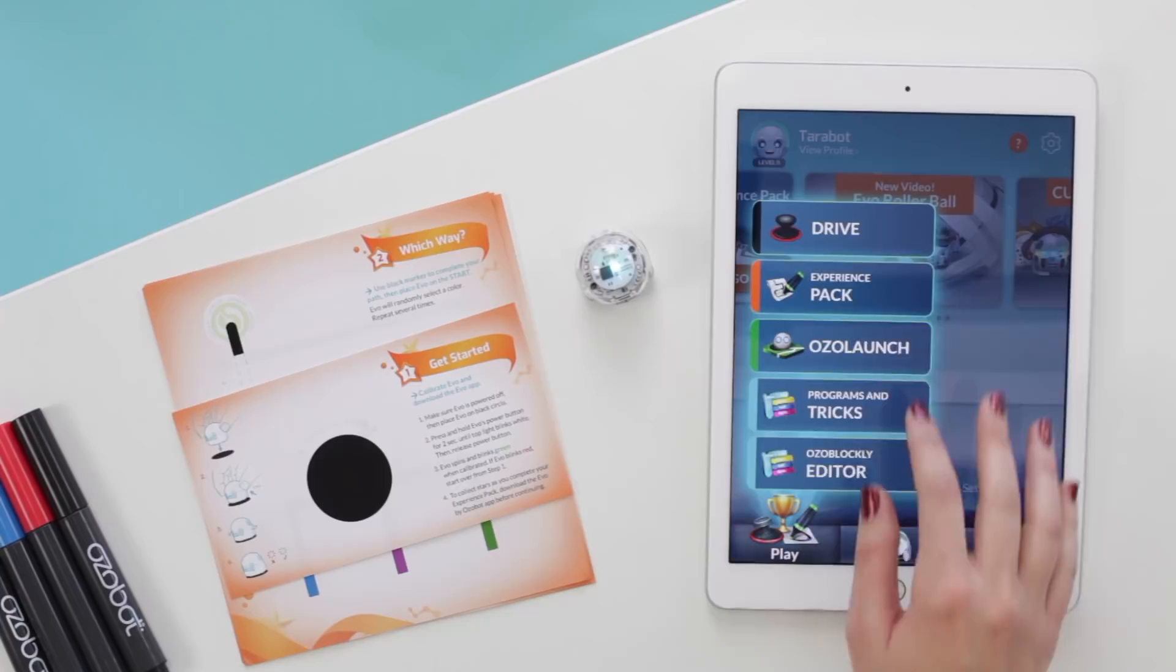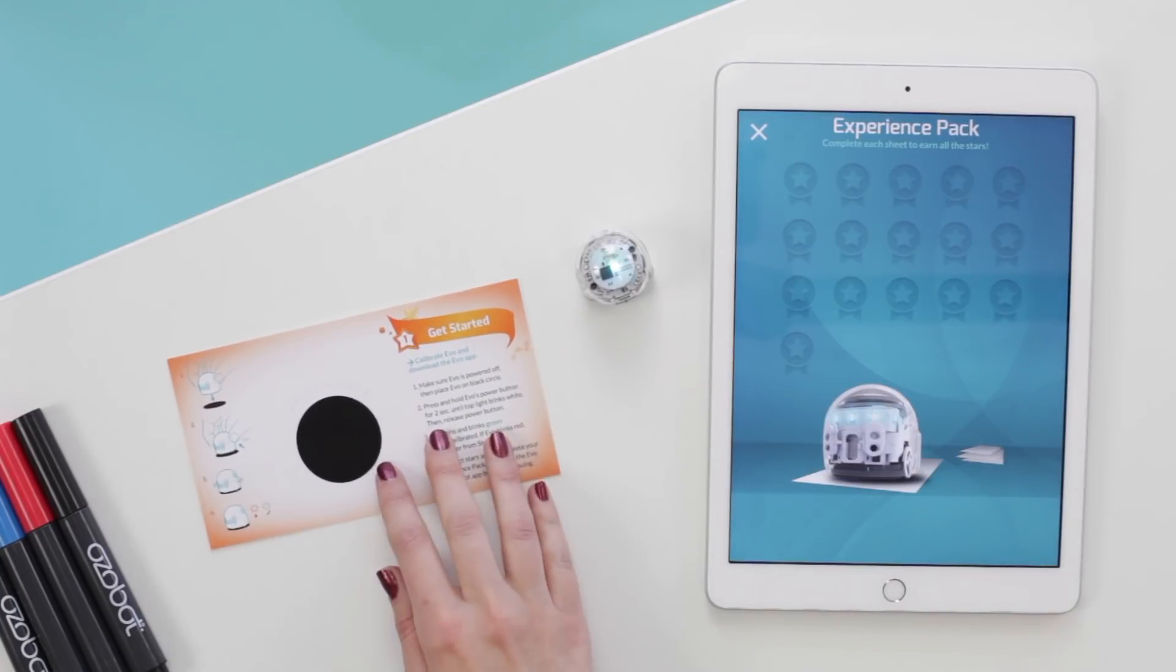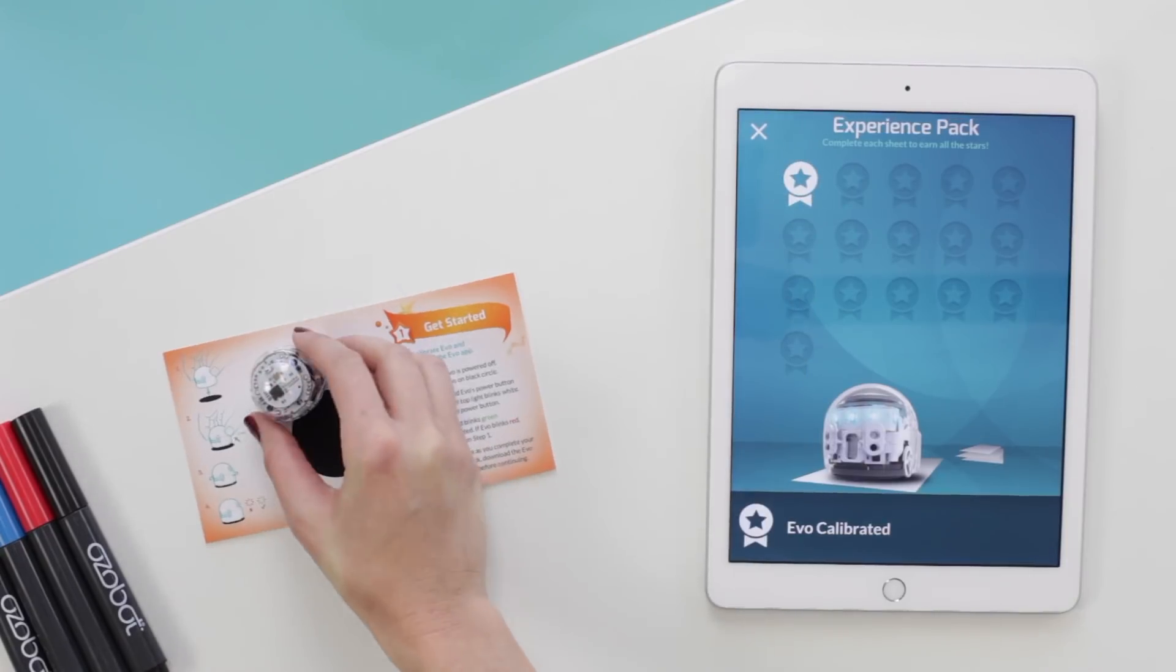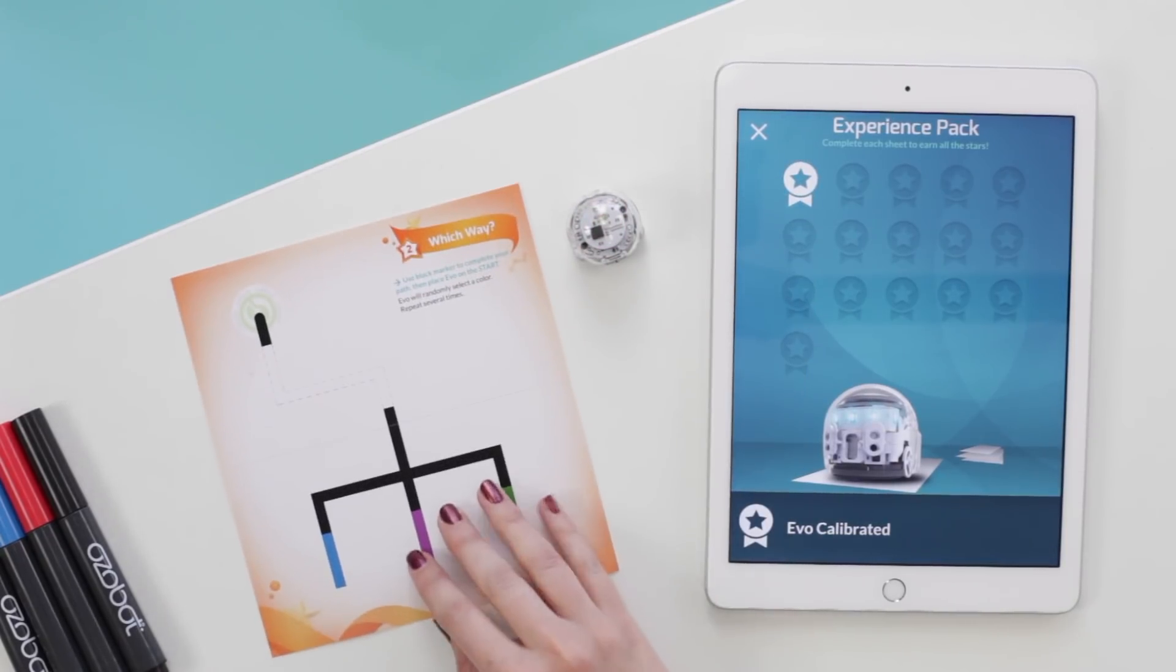Get your markers and Experience Pack from your EVO Starter Kit. Go to the Experience Pack section in the app. Complete the first sheet, calibration, for your first star.